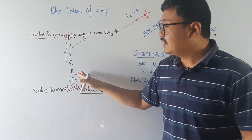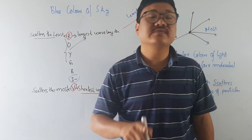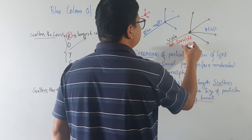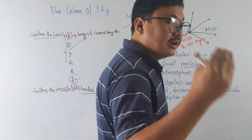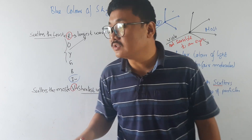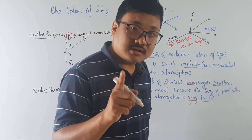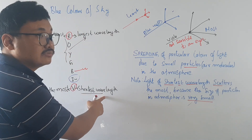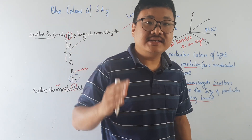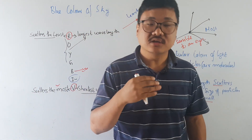Yes, violet and indigo are scattering the most — violet scatters the most. But we see blue. The reason is that violet is not sensible to our eyes. When violet and blue are both present, we don't see the violet — rather we only see the blue. That is why we see the blue color of light. Blue is very sensitive to us. But please remember: in the scattering process, violet has the shortest wavelength and always scatters the most, but we don't see a violet sky because violet is not sensible to our eyes. Blue is most sensible to our eyes, so we see blue.